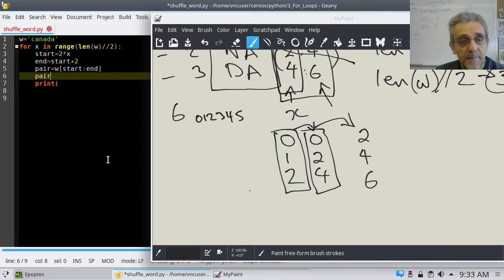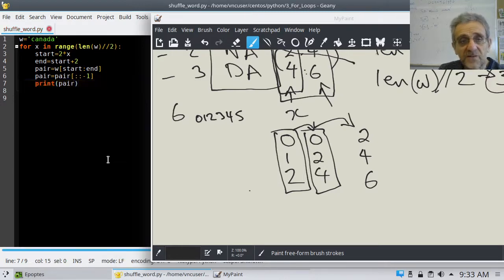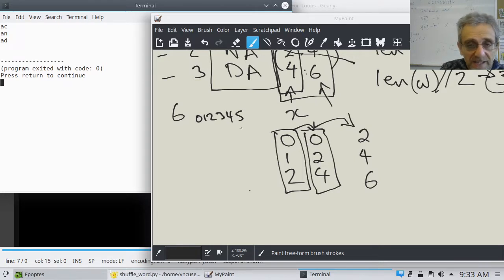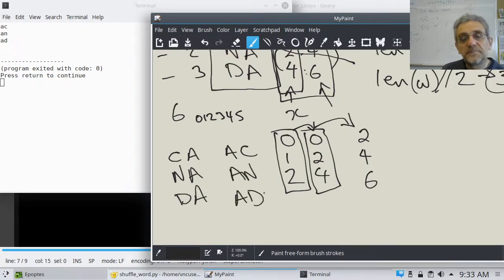Now, I'm going to reverse the pair. I'll say pair equals pair. And, now, I'll say, and that, remember that from our previous lesson, the one line palindrome, that will go from the beginning to the end negative step. And, if I print the pairs now, and I run it, excellent. So, I've taken ca, na, da, and turned it into a, c, a, n, a, d.